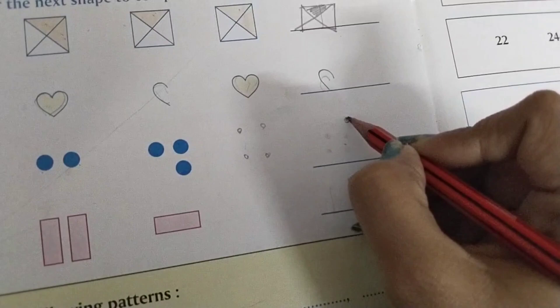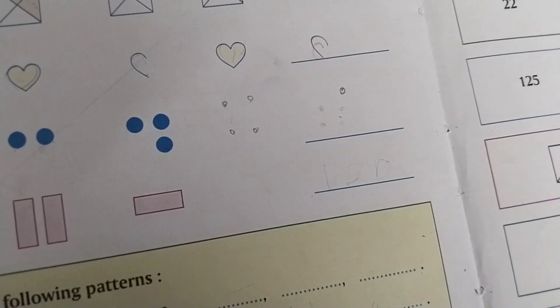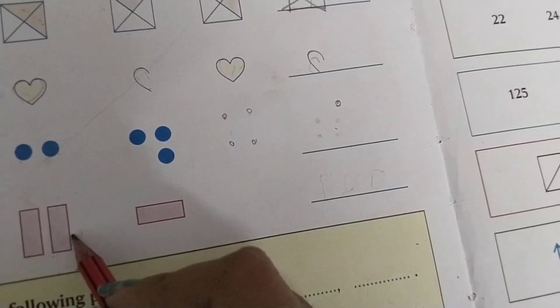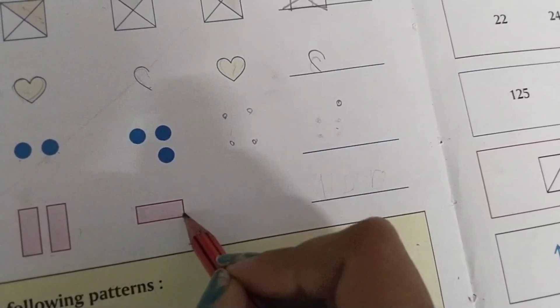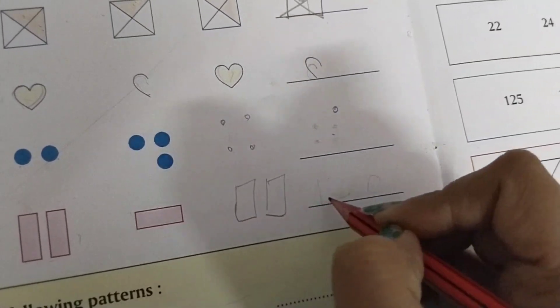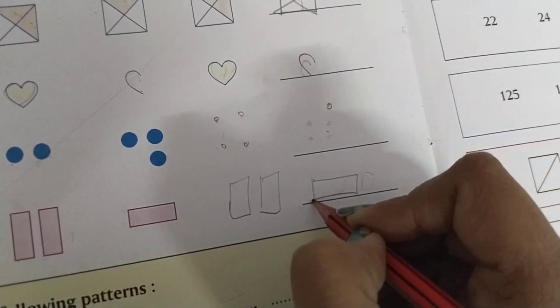Next we have rectangle, then two rectangles, then rectangle, then two rectangles.